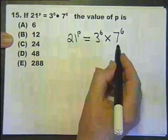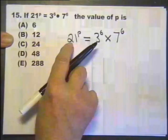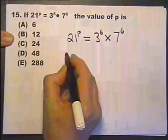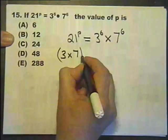There are several ways of doing this, but I'm going to approach it by spotting that 21 is actually 3 times 7. So I can rewrite this as 3 times 7 raised to the power of p.